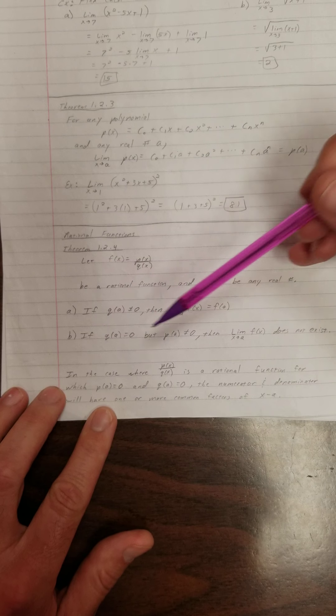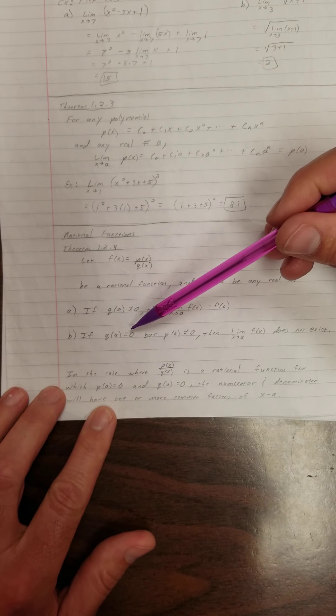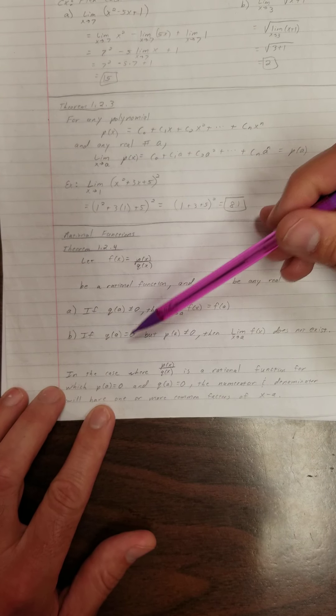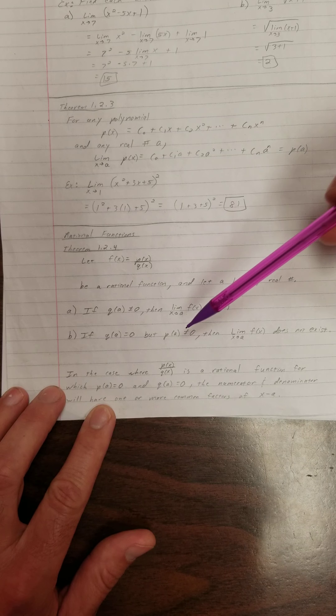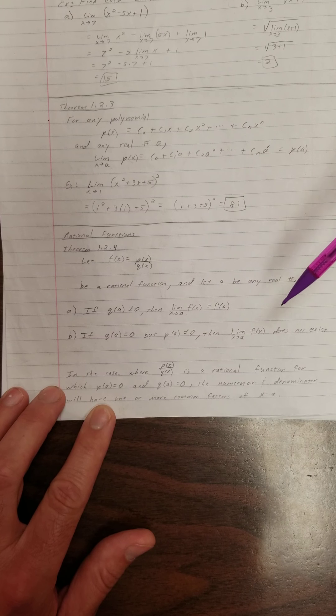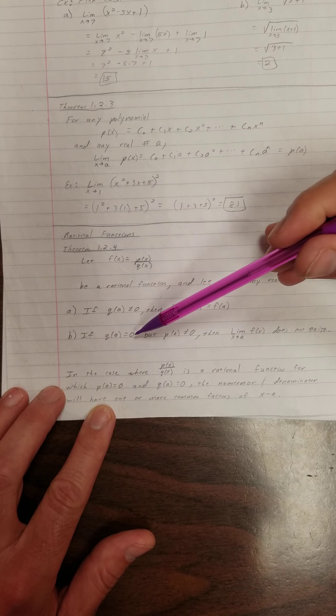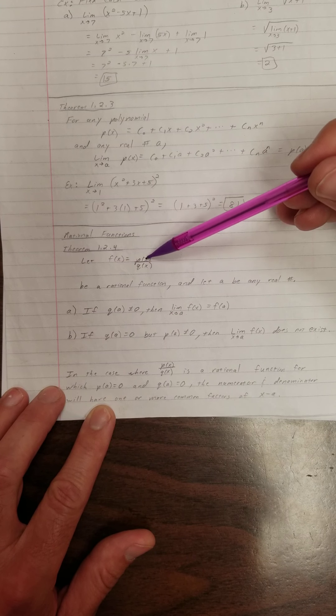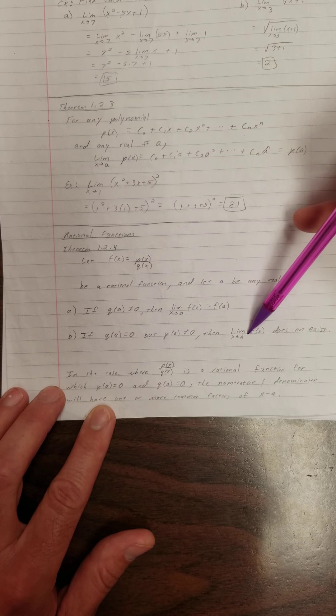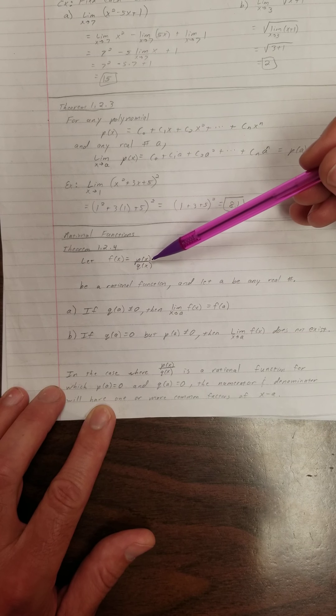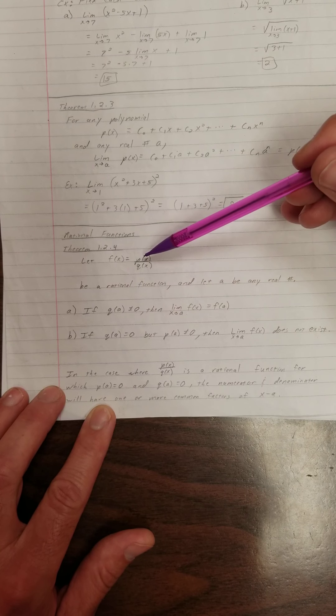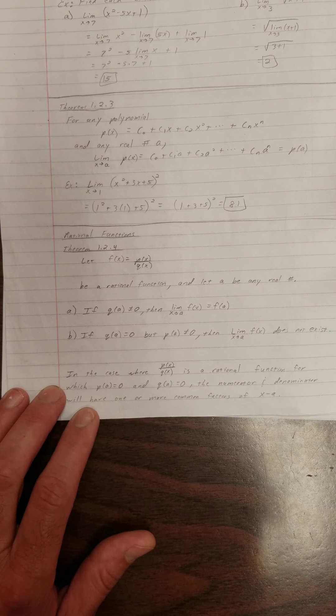Alright, this says that if I try to evaluate the function, but my denominator is equal to 0 and the numerator is not equal to 0, then the limit does not exist. Again, if I try to evaluate this function at that number a whenever I'm taking a limit, and the bottom is equal to 0 and the top is not, the limit does not exist.